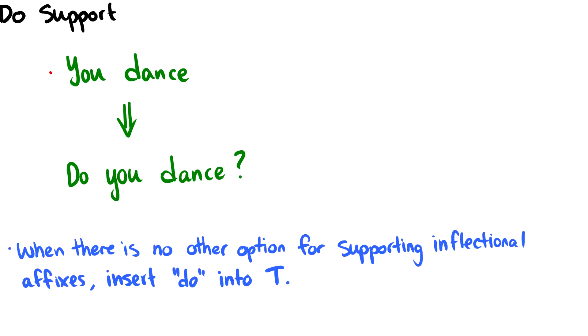And if you want to make it a question, we can't really do subject auxiliary inversion because we don't have any auxiliaries there. So what happens when we make it a question? Well, we end up with do you dance. And one of the big questions is where does this do come from? There's no do in our original statement.